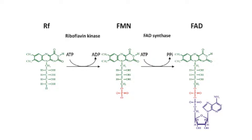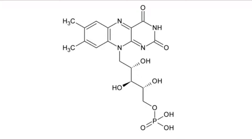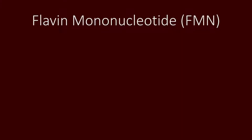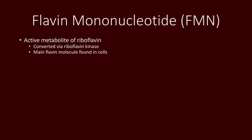FMN can then get further metabolized into flavin adenine dinucleotide, or FAD. FMN is one of the two active metabolites of riboflavin. Our body can convert it from riboflavin through the enzyme riboflavin kinase.